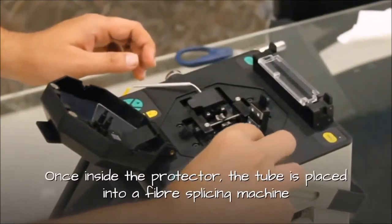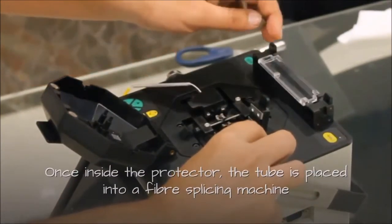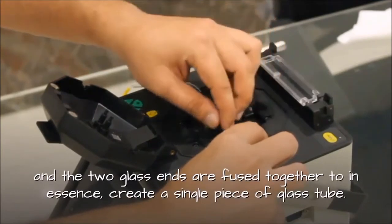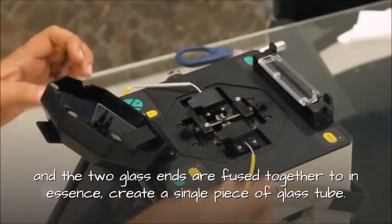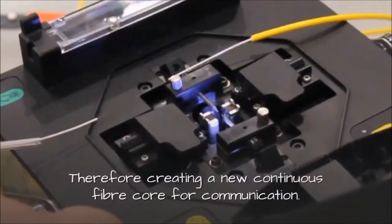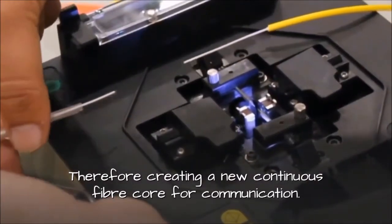Once inside the protector, the tube is placed into a fiber splicing machine and the two glass ends are fused together to, in essence, create a single piece of glass tube, therefore creating a new continuous fiber core for communication.